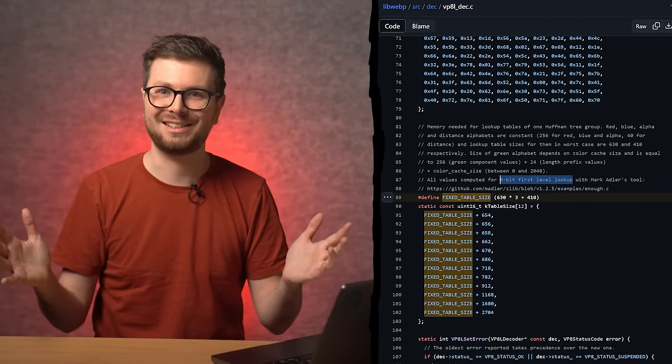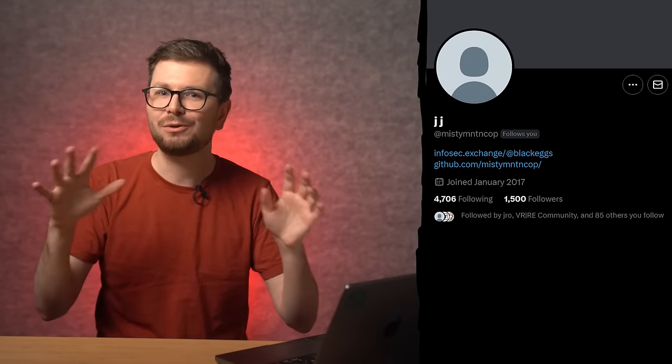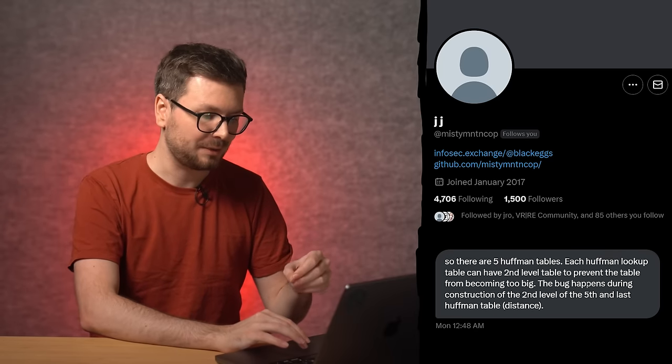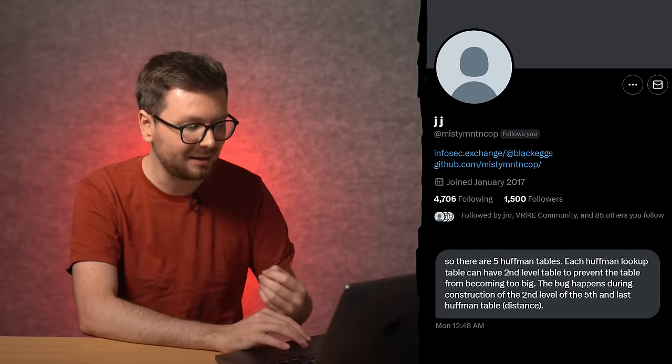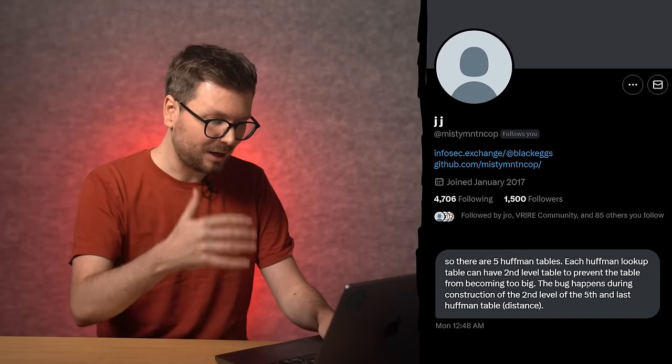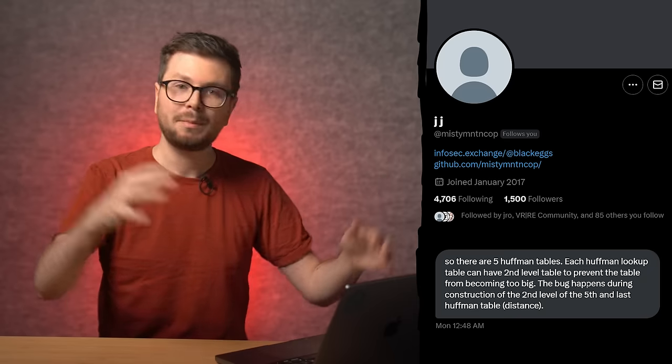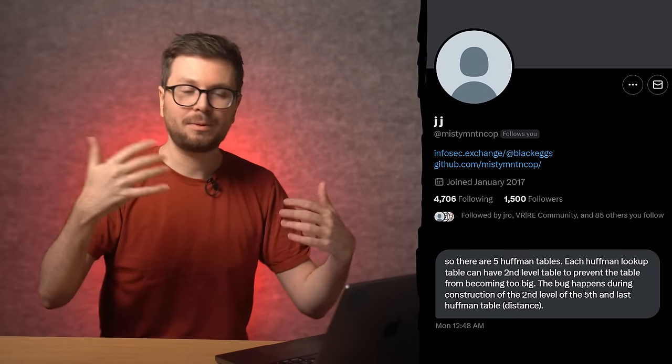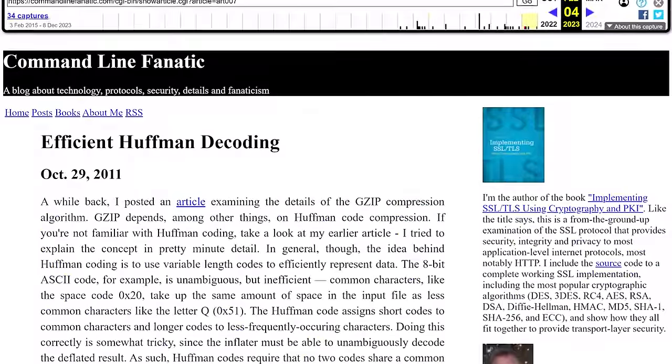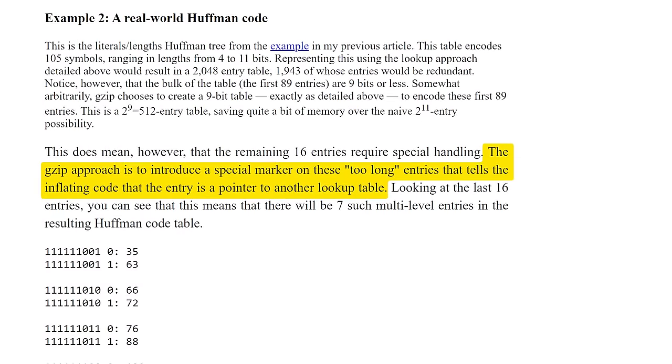And eventually, after talking to Misty Mountain Cop on Twitter, it clicked for me. I found the missing link. They wrote, each Huffman lookup table can have a second level table to prevent the table from becoming too big. So this links our understanding of these tables being able to grow, but also that developers are aware of that. So that's why they use layers of tables in practice. They also shared this article explaining this more. The gzip approach is to introduce a special marker on these too long entries that tells the inflating code that the entry is a pointer to another lookup table. This way you prevent the size from exploding and you still get the speed of direct table offsets. And that's why it's used in practice in various places, including webp Huffman tables.